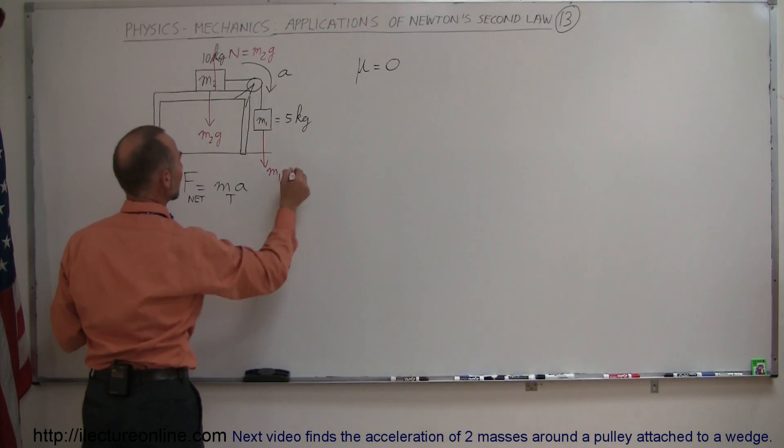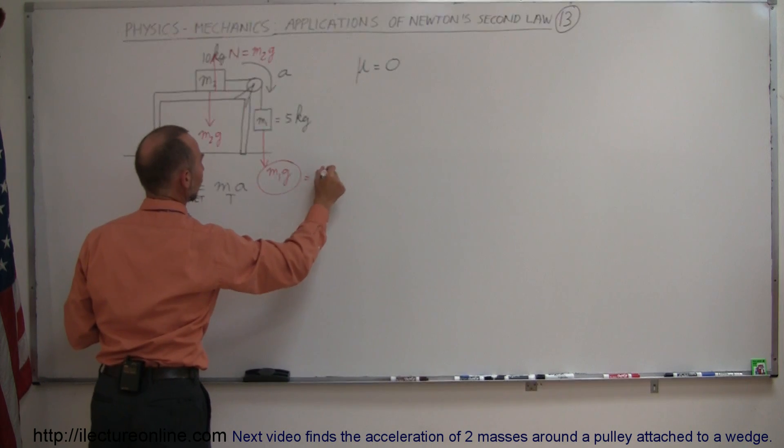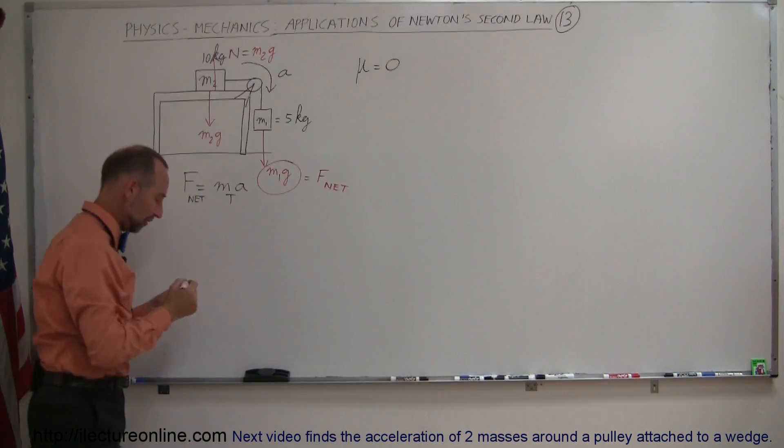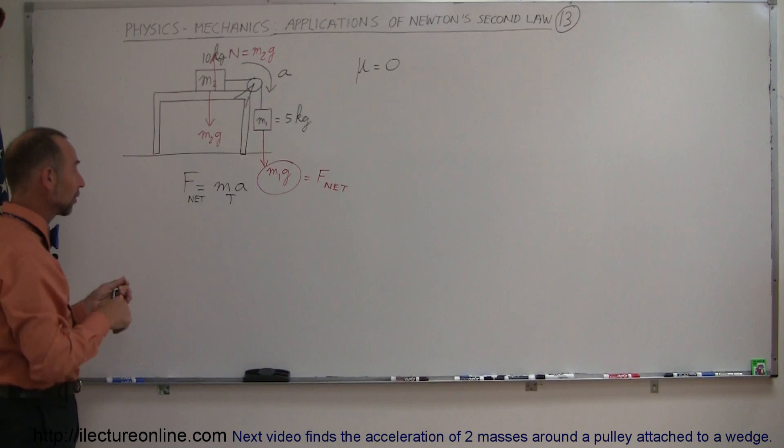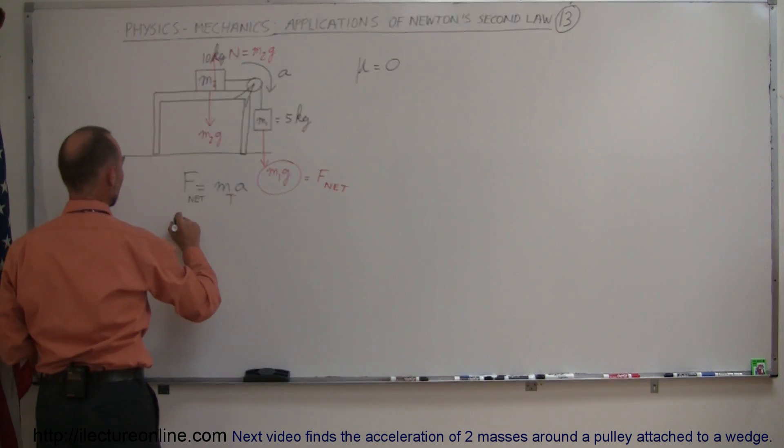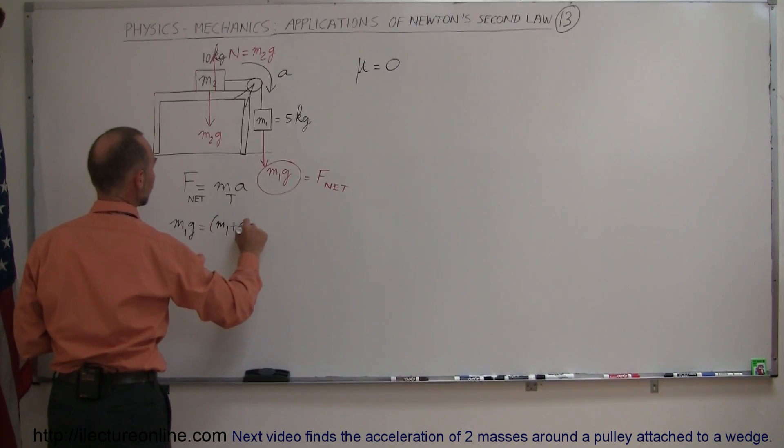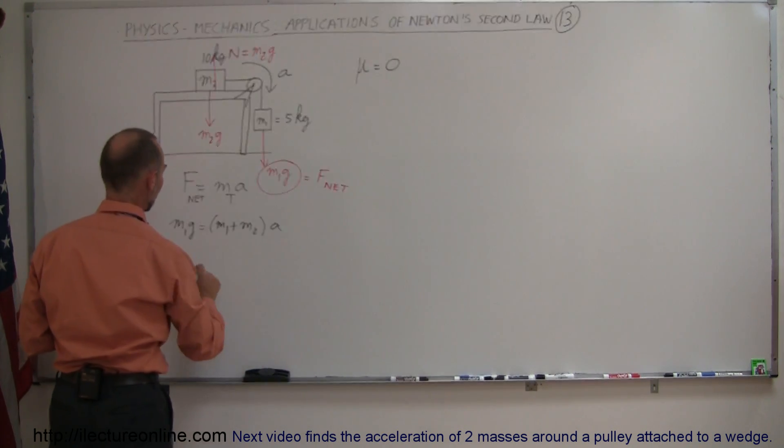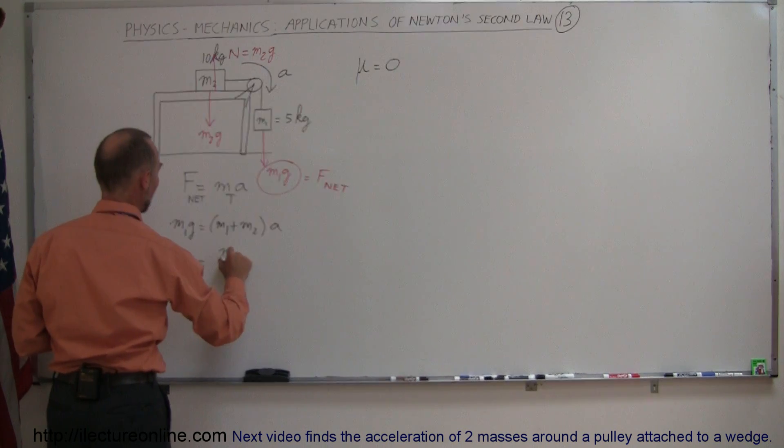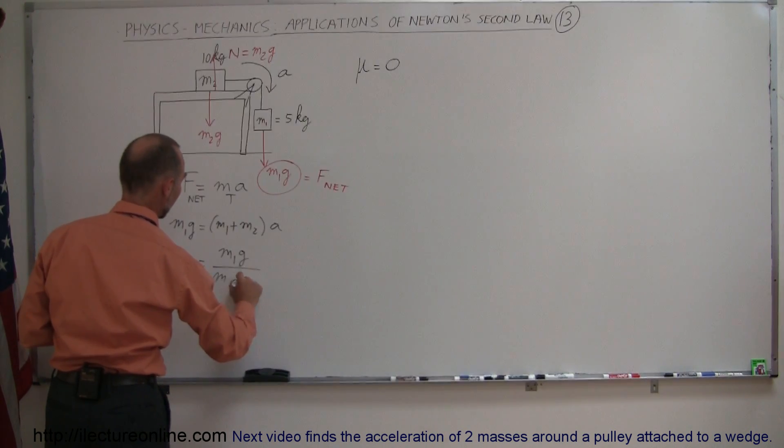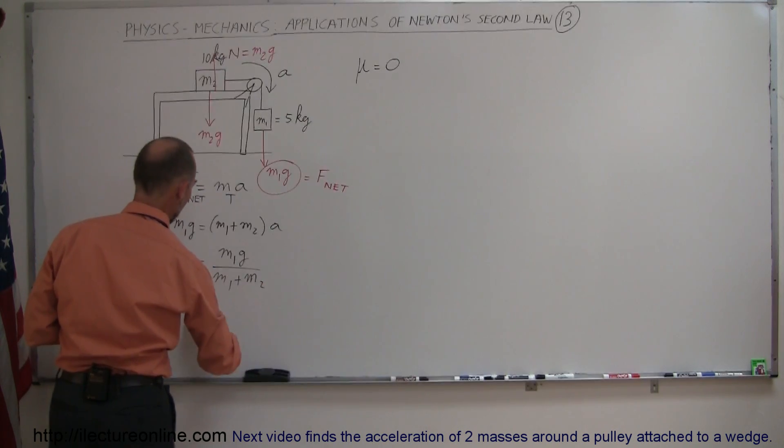So this here can be considered the net force, F net. Okay, since that's the case, we then plug it into our equation. We can say that M1G is equal to the total mass of the system, which is the sum of M1 plus M2 times the acceleration of the system, or A is equal to M1G divided by M1 plus M2.